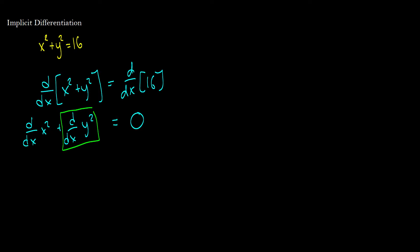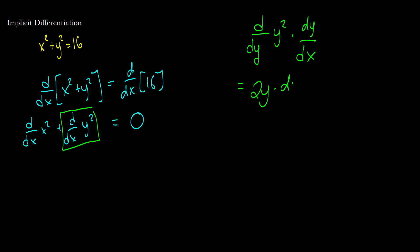We're going to use the chain rule here. The derivative of y squared with respect to x is like taking the derivative of y squared with respect to y, and then multiplying by the derivative of y with respect to x. So this equals 2y times dy/dx. We can write this as 2y times dy/dx, or equivalently as 2y times y prime.